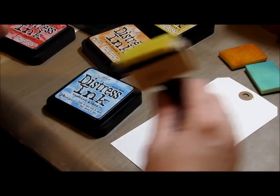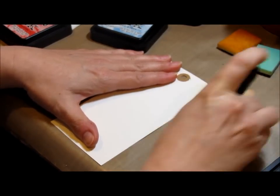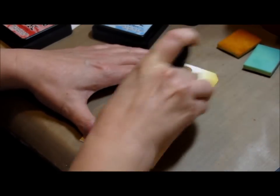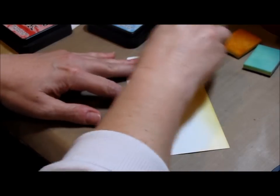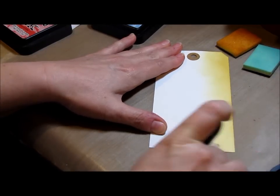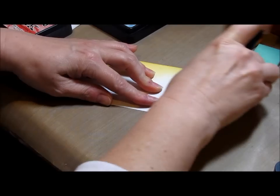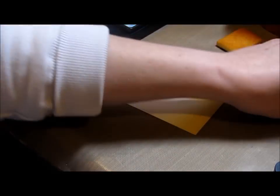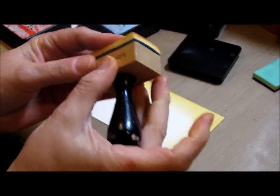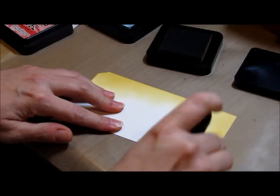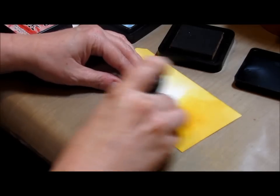So anyway, I'm gonna start with the scattered straw. Okay next I'm gonna go with wild honey, and because this is the easiest pad to use or tool to use, I'll use this one next and just go in there with this wild honey.